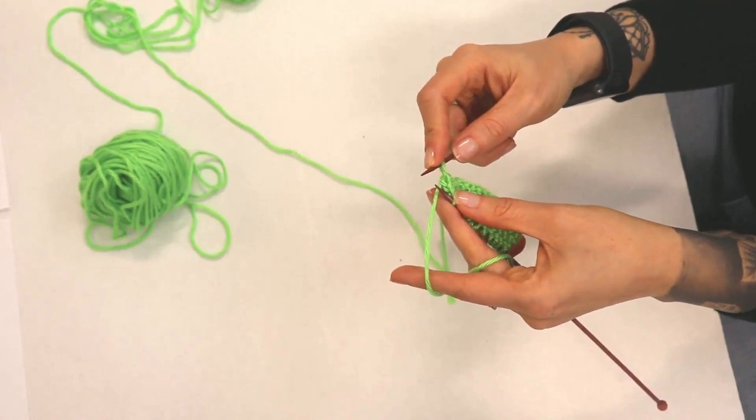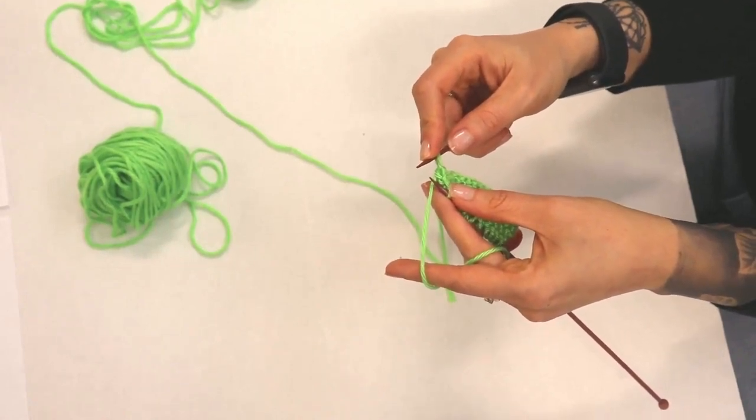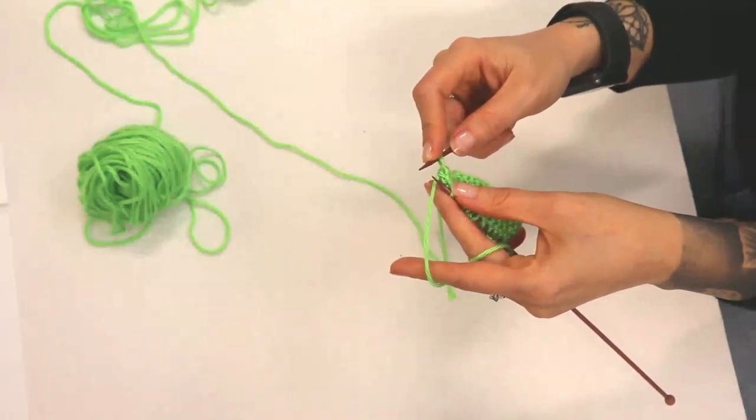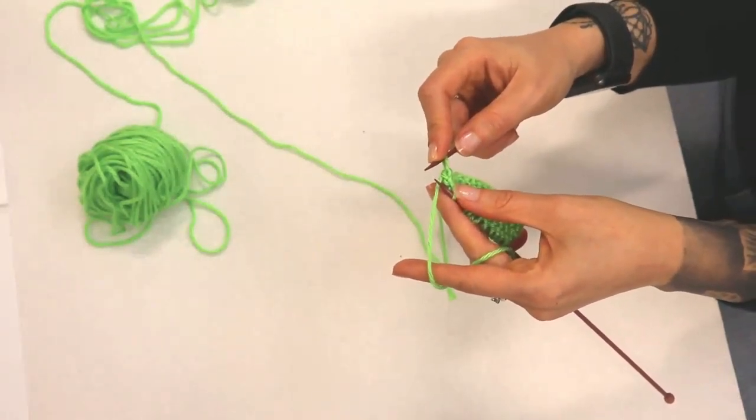Continue knitting across the cast-on row. When you have emptied the last stitch from the left needle, you've completed a row. Exchange the needles, returning the needle with the stitching to your left hand.